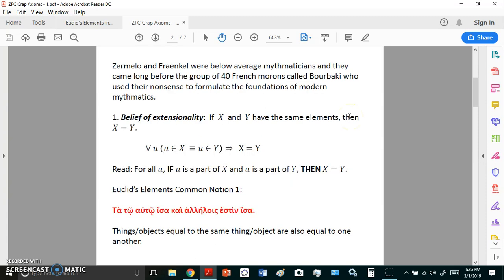Now Zermelo and Fraenkel were pretty much below average mathematicians and they came long before the group of those 40 French morons who called themselves Bourbaki and used their nonsense to formulate the foundations of modern mathematics.